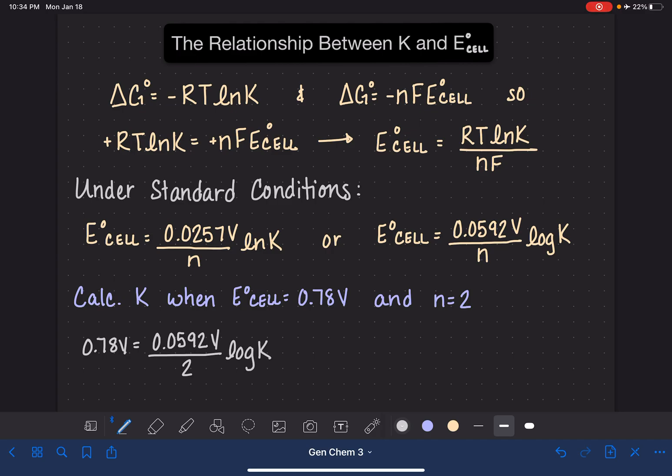So I've just got to do a little bit of math first to isolate the log base 10 part. I'm going to take the 0.78 volts, and I'm going to divide it by this term over here. And that's going to give me 26.35. And there's no units on this because the volt units cancel out.